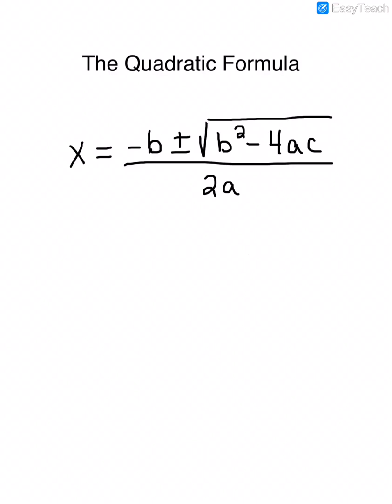To use the quadratic formula, we have to get our quadratic equation in general form. General form of a quadratic equation is ax squared plus bx plus c equals 0. The coefficient in front of x squared is a, the coefficient of x is b, and the constant is c. We pull out those numbers and plug them into the quadratic formula and simplify to solve.